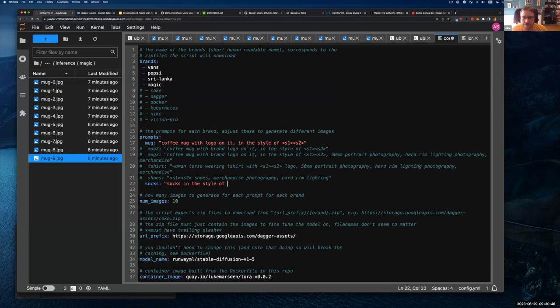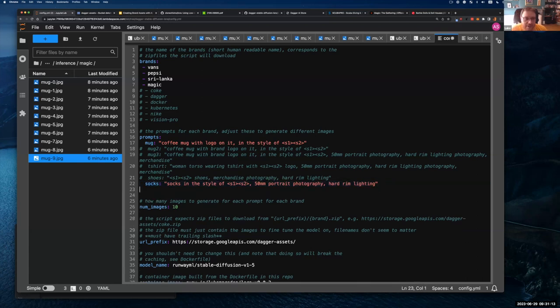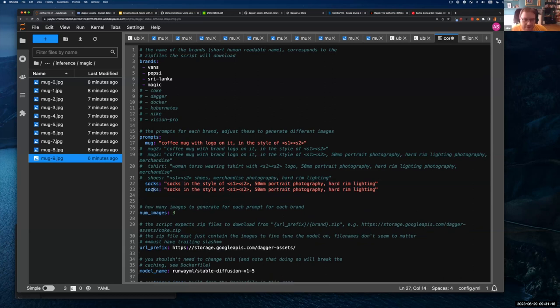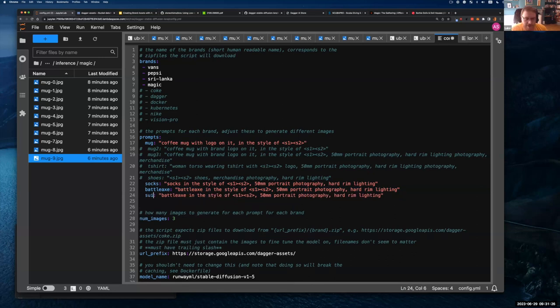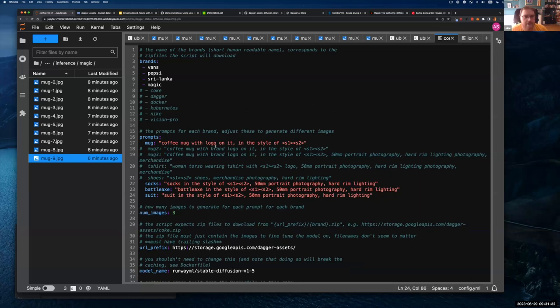Socks. Okay. So card. I don't know what a four-byte burger is. A battleaxe. Oh, that's quite a good one. Okay. I need to go to the config file. Okay. So I'm going to do socks in the style of, and then this S1, S2 thing is the special token that represents the style of the thing that we've taught it.